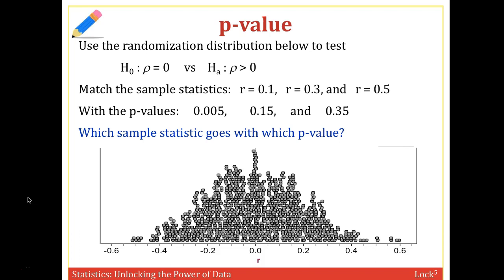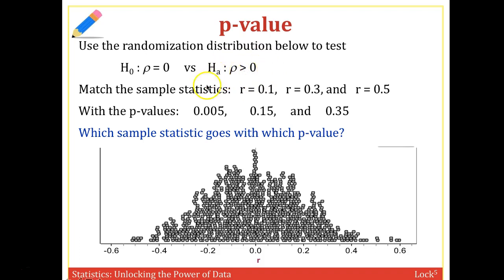Now let's use the randomization distribution to test the null hypothesis that rho equals 0 — this is correlation, so we're assuming there's no correlation between two data sets. The alternative hypothesis is that there is some positive correlation: rho is greater than 0. We want to match these statistics — R equals 0.1, 0.3, and 0.5 — with three different p-values.